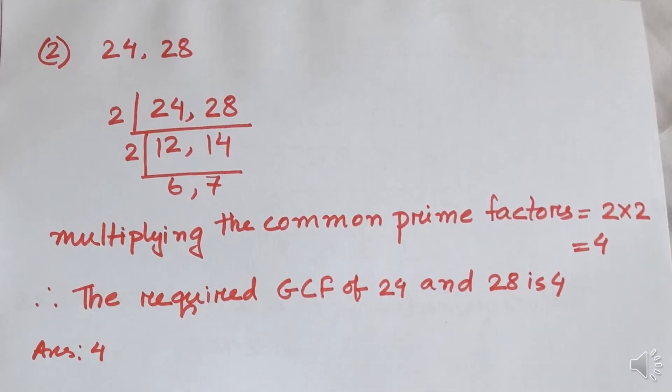For number 2, we have 24 and 28. Dividing by 2: 24 ÷ 2 = 12 and 28 ÷ 2 = 14. Dividing by 2 again: 12 ÷ 2 = 6 and 14 ÷ 2 = 7. The common factor is 2 (appearing twice); 6 and 7 are not common. Multiplying the common prime factors: 2 × 2 = 4. Therefore, the required GCF of 24 and 28 is 4.